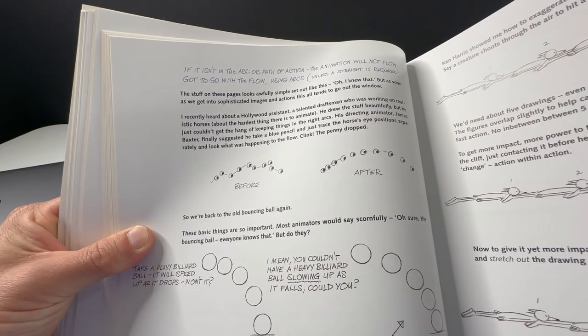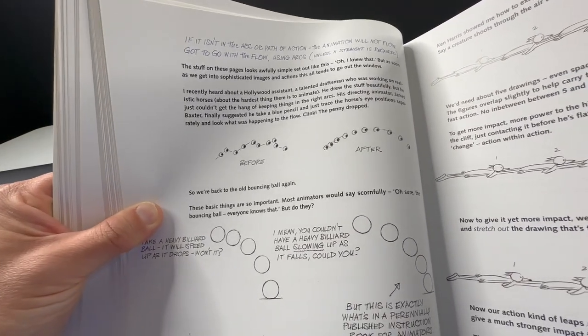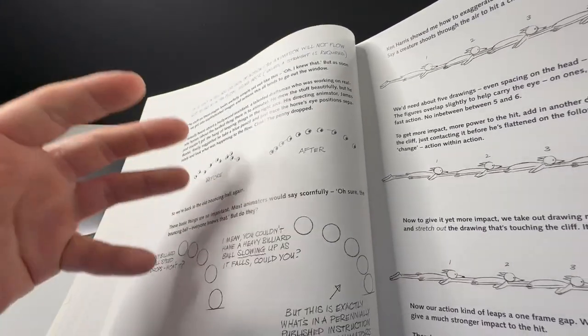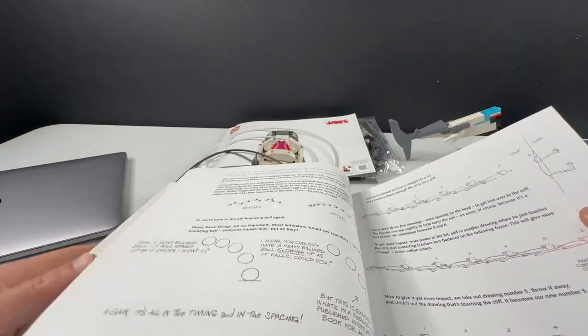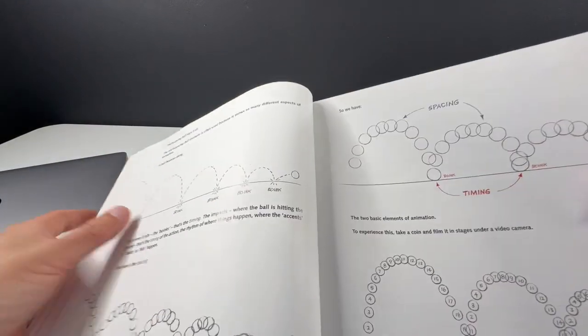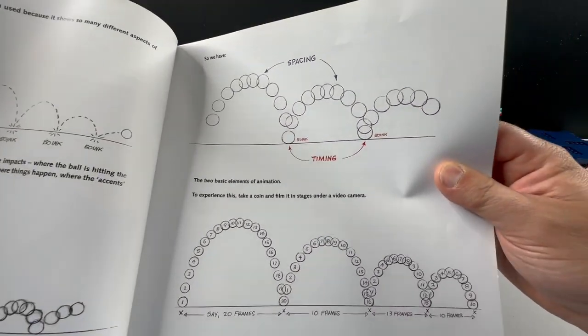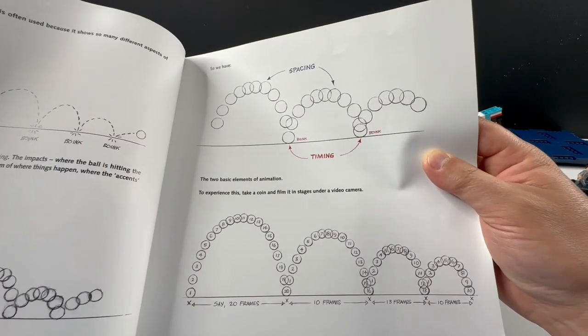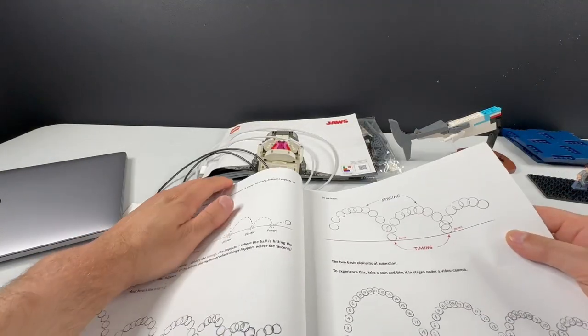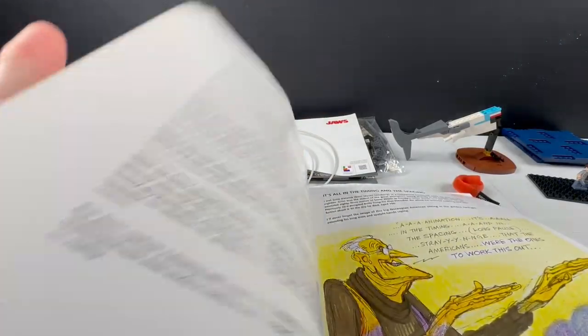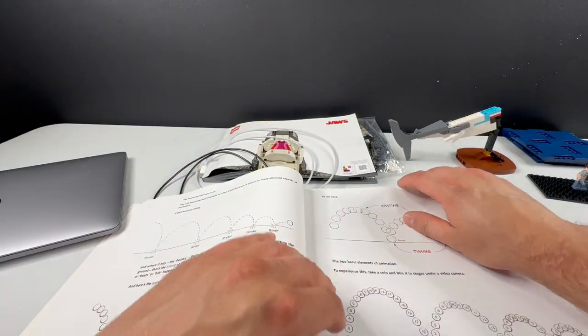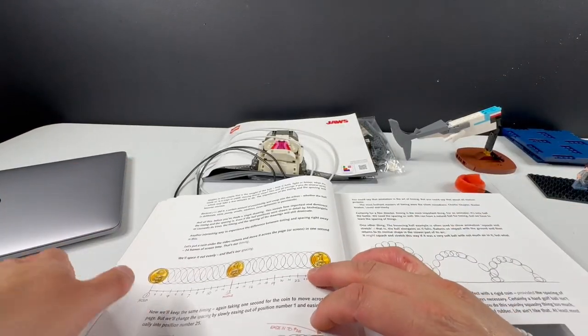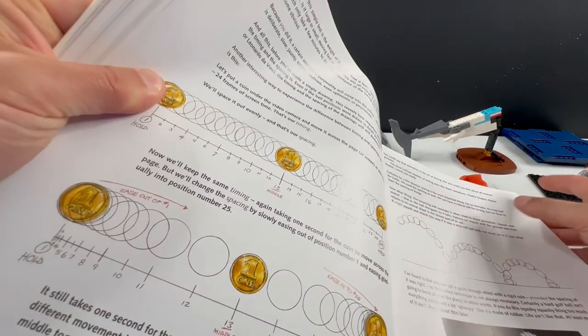I mean it says it right here, so we're back to the old bouncing ball again. As I said, that bouncing ball in the very beginning of the book, it's basically the fundamentals of animating. And of course also back here if we go back a little bit, oh no, I can find it right here, this is also some of the core basics of animating.